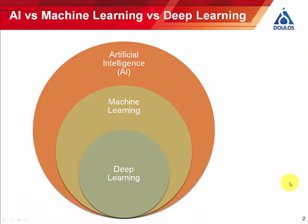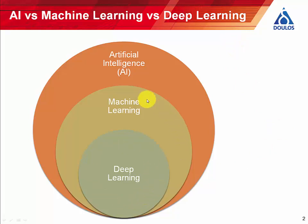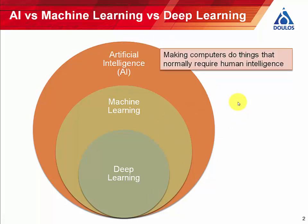Let me start by saying a few words about artificial intelligence versus machine learning versus deep learning. Deep learning is a subset of the wider topic of machine learning, and machine learning in turn is a subset of artificial intelligence. Artificial intelligence is a very broad field that's been around since the 1960s at least, and in general terms it means making computers do things that would normally require human intelligence.